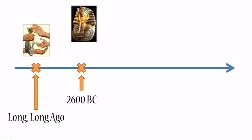Gold was shiny and it was soft, so you could mold it into different shapes. And most importantly, it was very scarce — it was very hard to find, and that also increased its value.